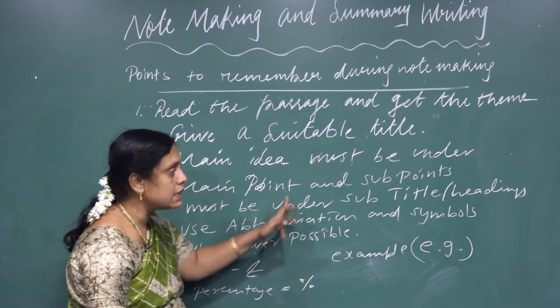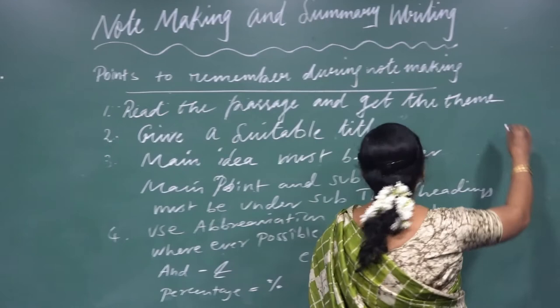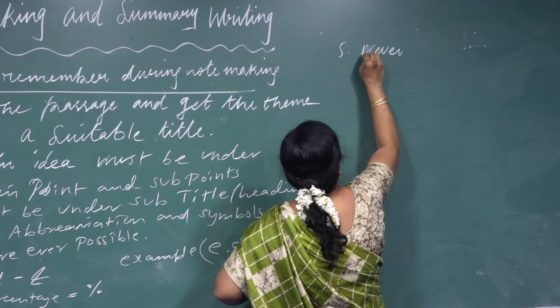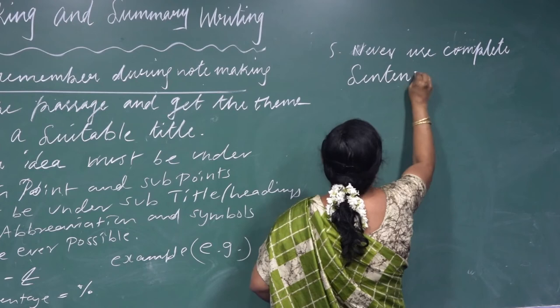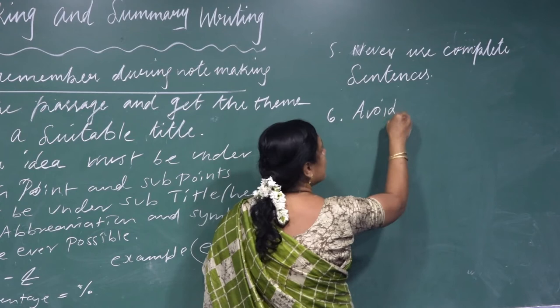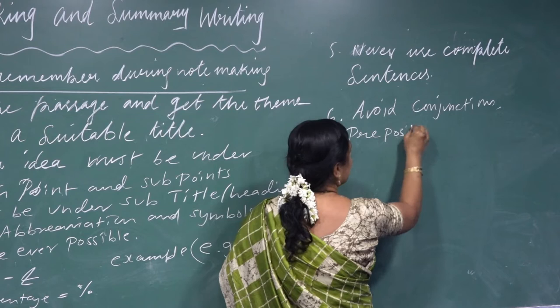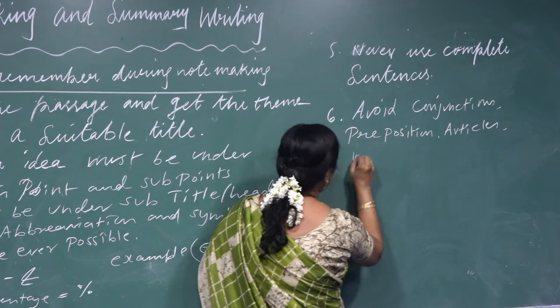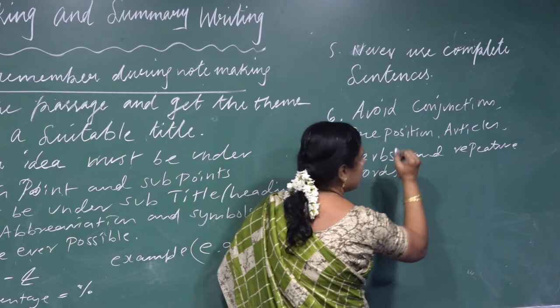Third point: the main idea must be under the main point, and sub-points must be under the sub-heading or sub-title. Fourth point: use abbreviations and symbols wherever possible — for example, '&' for 'and', '%' for percentage, and 'e.g.' for example. Fifth point: never use complete sentences. Sixth point: avoid conjunctions, prepositions, articles, verbs, and repetitive words.